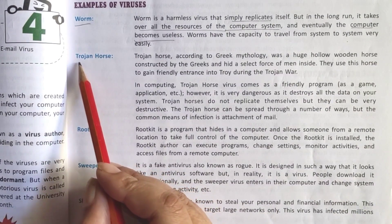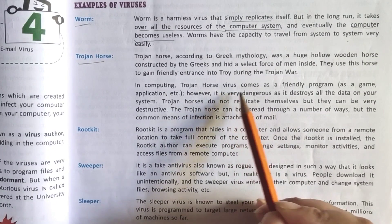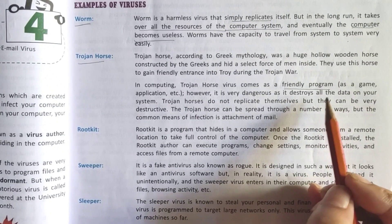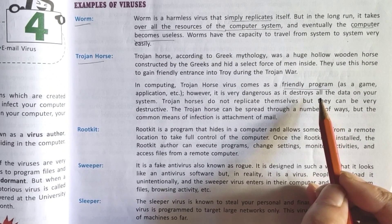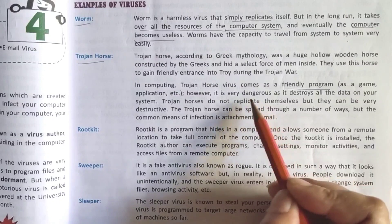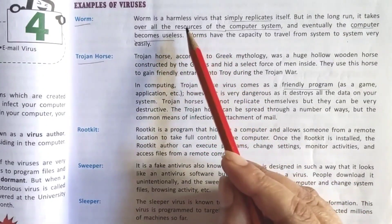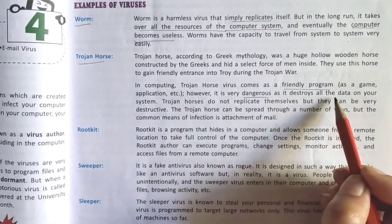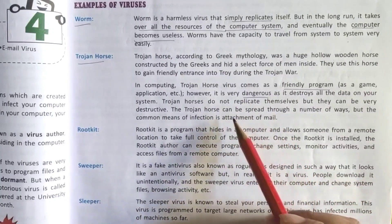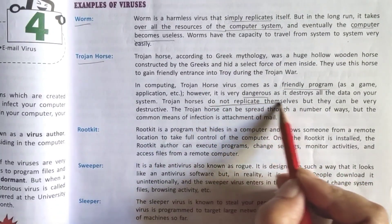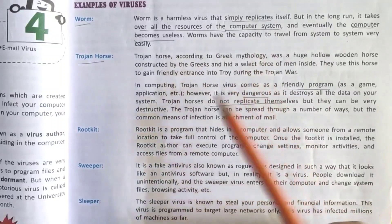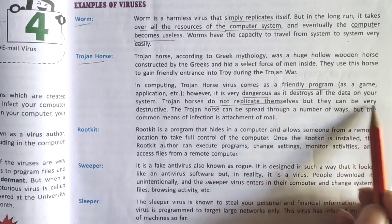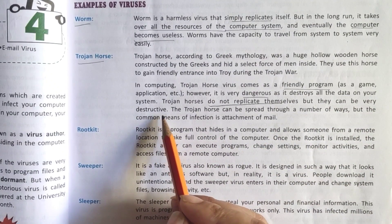Next we have Trojan horse virus. Trojan horse virus mostly comes in the form of a friendly program, or in the form of games or applications which you have downloaded through the internet. It is very dangerous — worm virus is harmless, but Trojan horse virus is dangerous. It destroys all the data on your computer system. Trojan horse does not replicate itself.